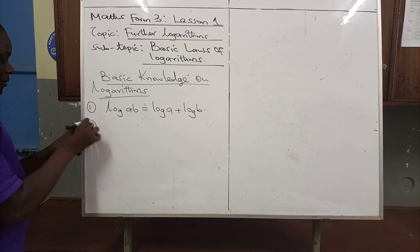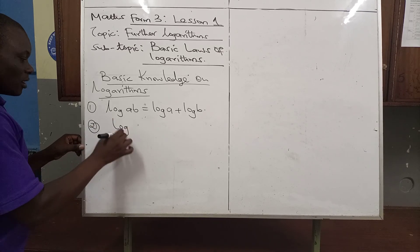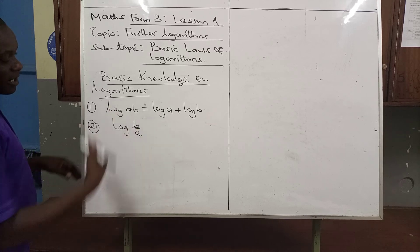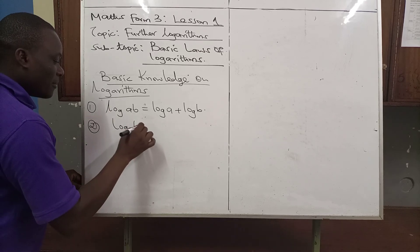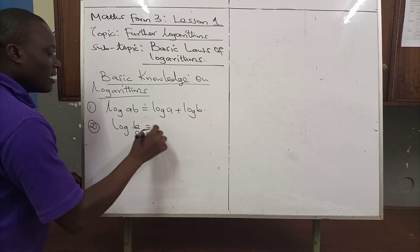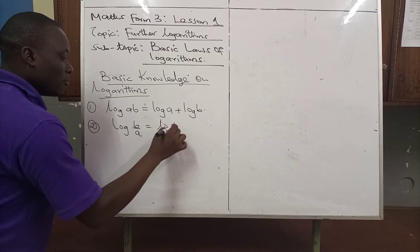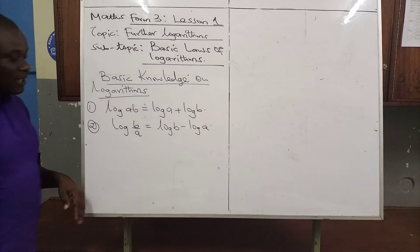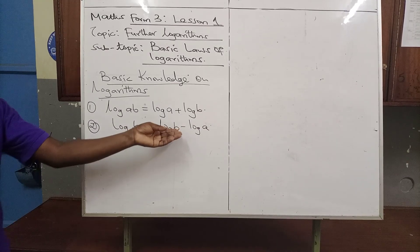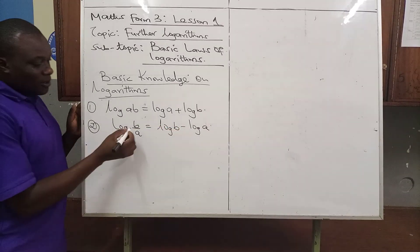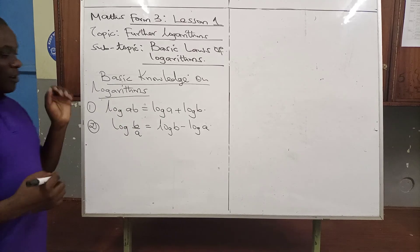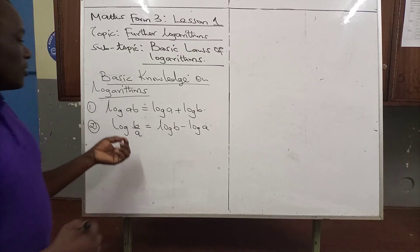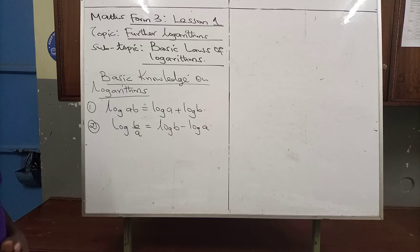Number two: if you have been given log(B divided by A), this is the same as saying log B minus log A. The reason for using minus here is because of the division. Whenever you have a division, you change it into a minus.